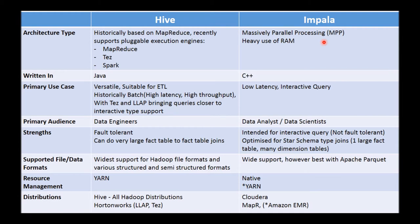One of the things that makes Impala particularly fast is its heavy usage of RAM. As opposed to disk IO, it tries to cache and manage as much data in RAM as possible. So from a fundamental architectural standpoint, you're looking at two very different techniques to query data on top of Hadoop.